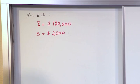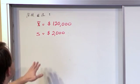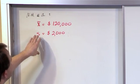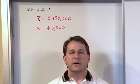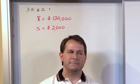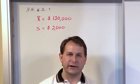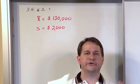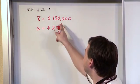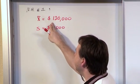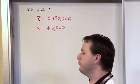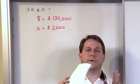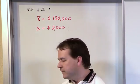What this means — and we've talked about it many times before — is that the average selling price, or the average value of the houses in that neighborhood, is one hundred and twenty thousand. The standard deviation is two thousand dollars. That means a good chunk of the houses in neighborhood one are plus or minus two thousand dollars around this mean — so between one hundred and eighteen thousand dollars up to one hundred and twenty-two thousand dollars. A lot of the houses are falling into that window.